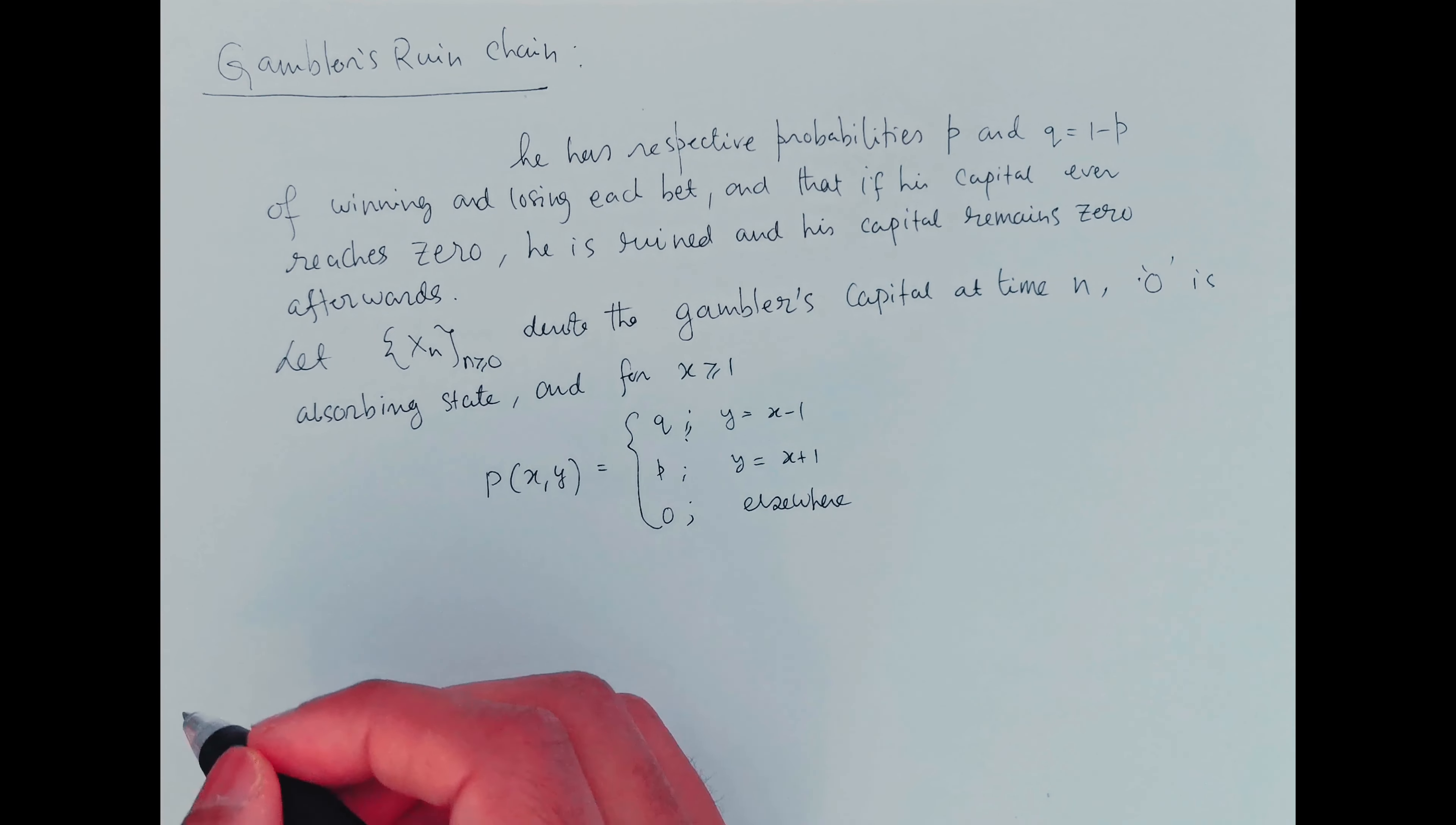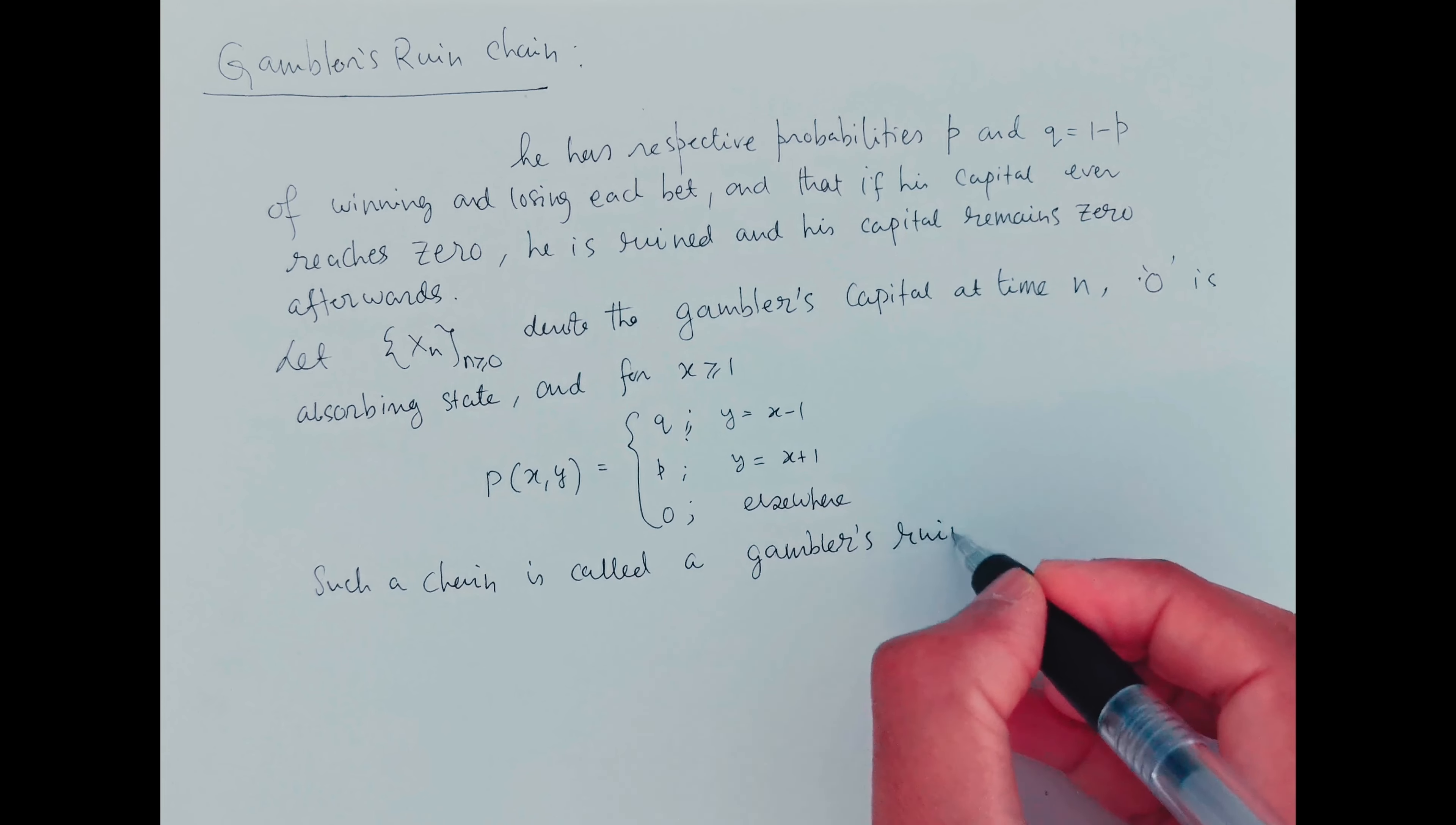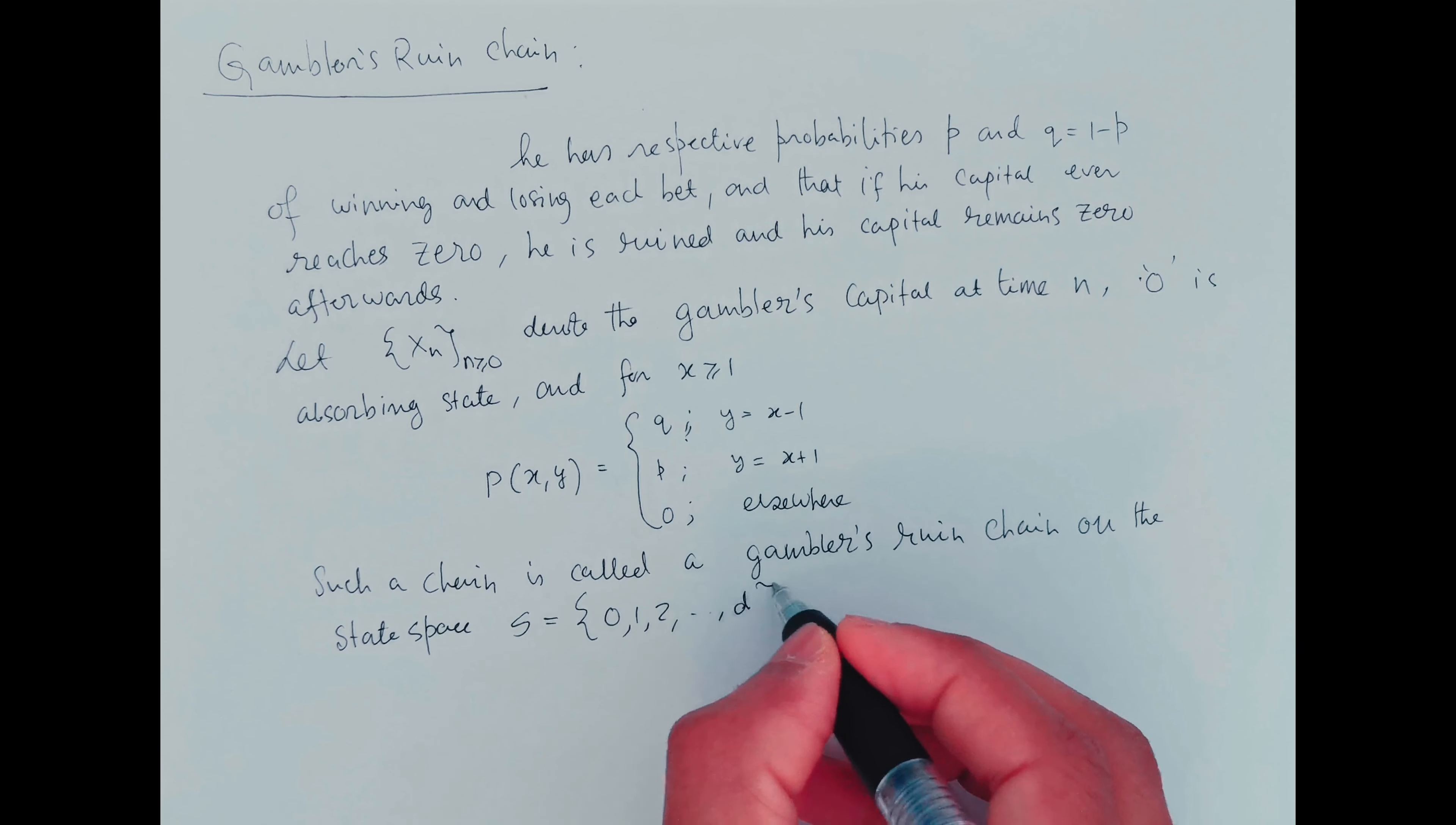So such a chain is called a gambler's ruin chain on the state space. The gambler's ruin is 0, 1, 2 dot dot d.